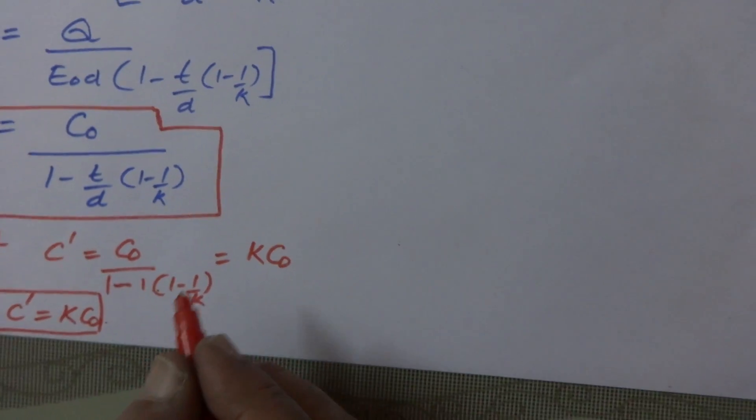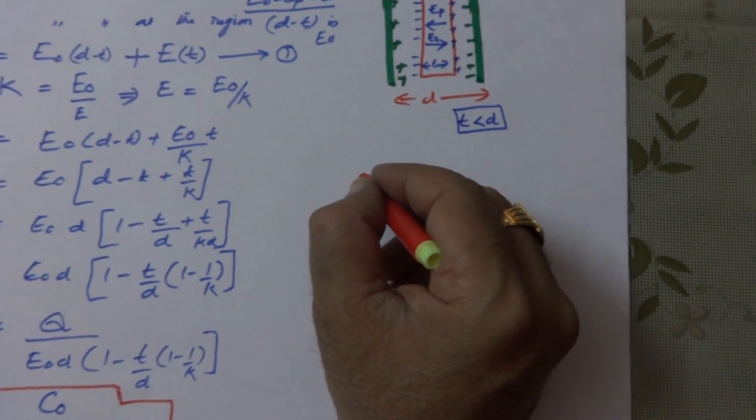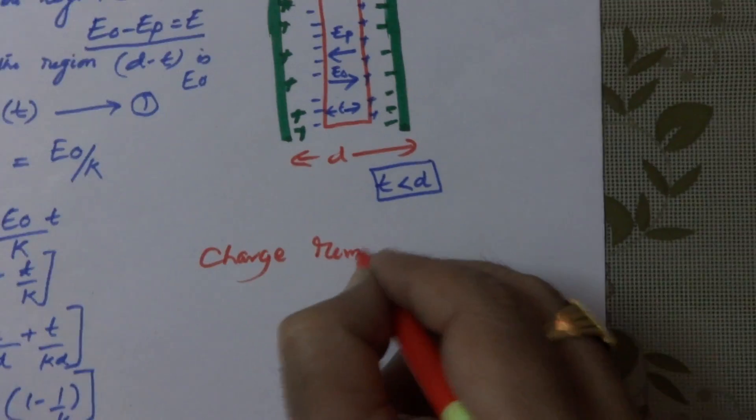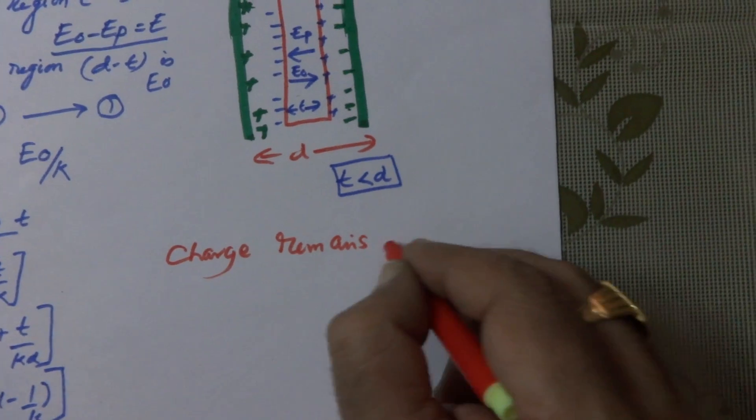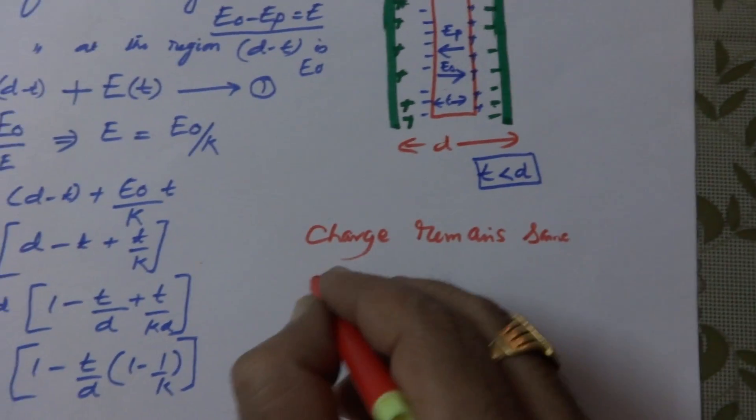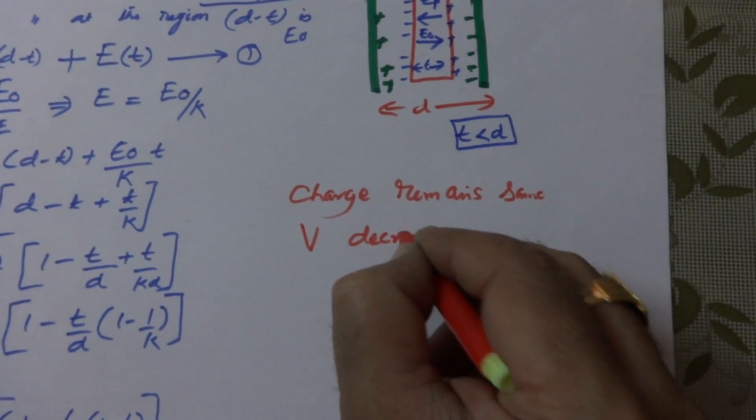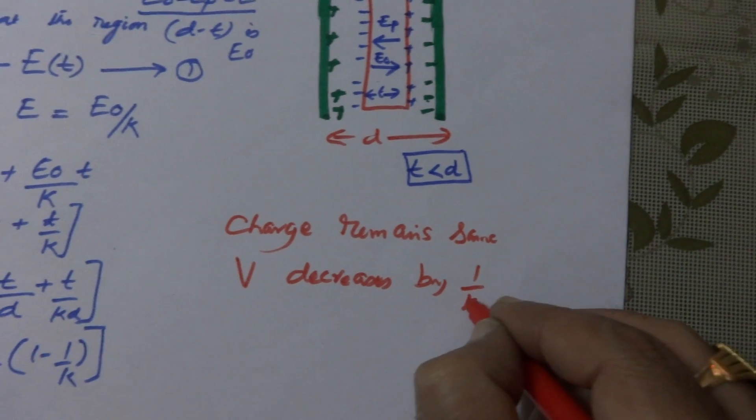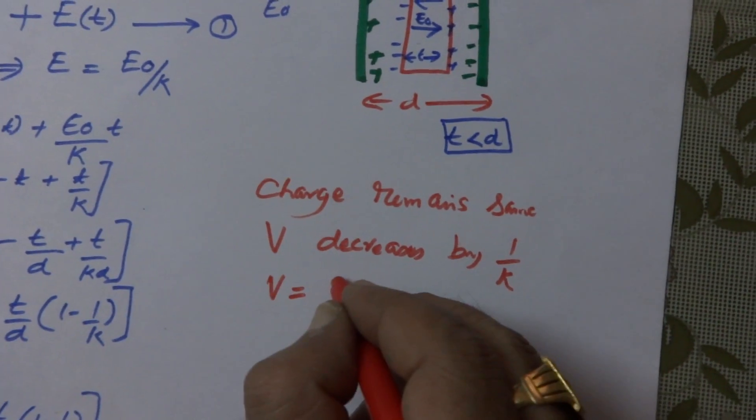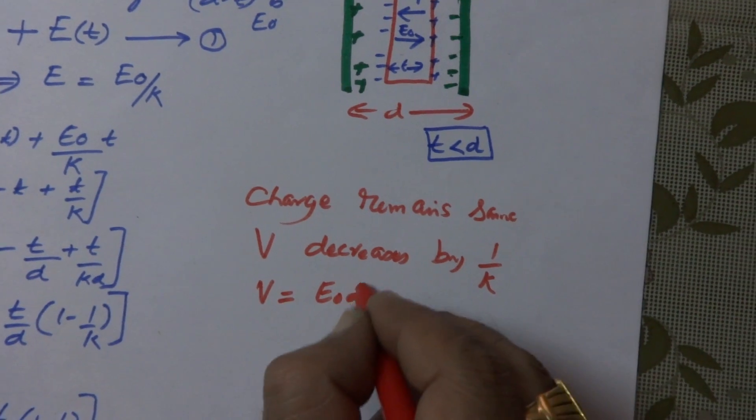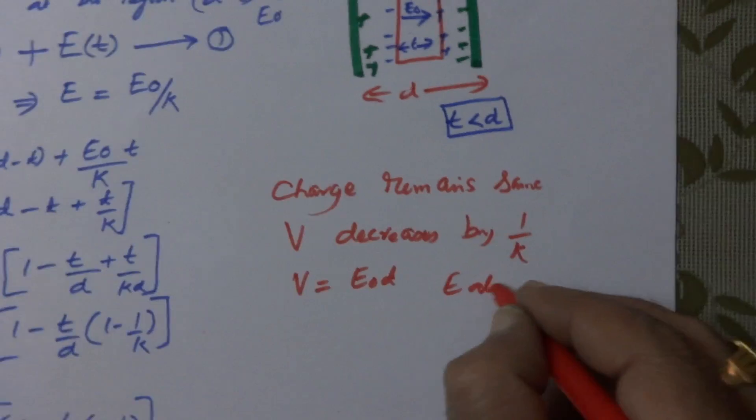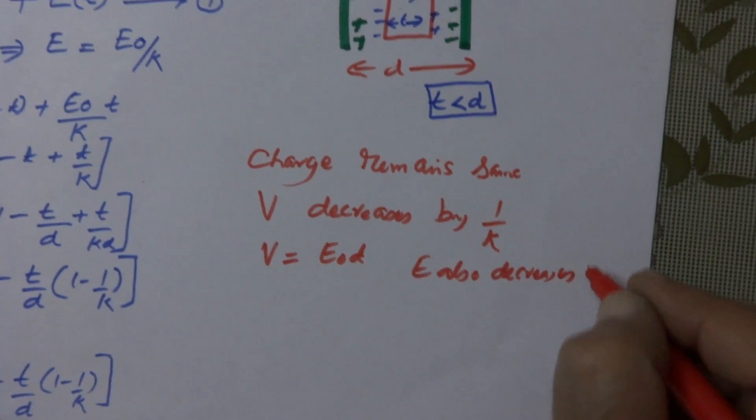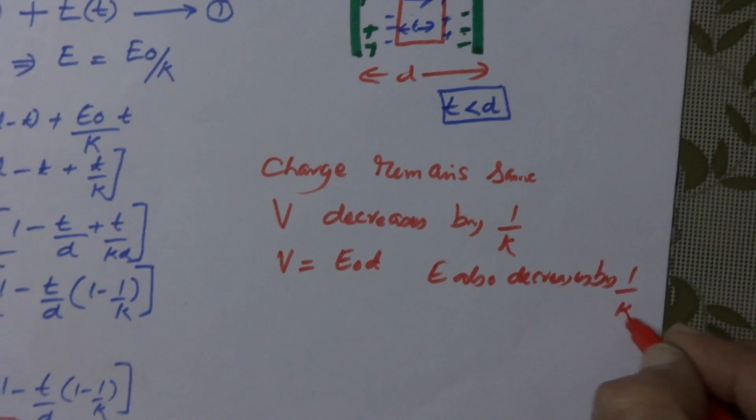Here, we must know by introducing the dielectric slab, the charge will not be changed. Charge remains same. Now, what happens? V decreases by 1 by k times. We know that V is equal to E0 times d. Therefore, E also decreases by 1 by k.